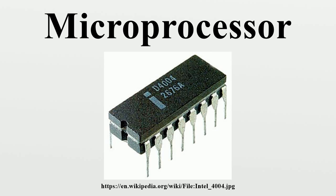As microprocessor designs get faster, the cost of manufacturing a chip generally stays the same. Before microprocessors, small computers had been implemented using racks of circuit boards with many medium and small-scale integrated circuits. Microprocessors integrated this into one or a few large-scale ICs.